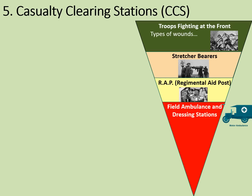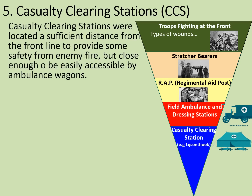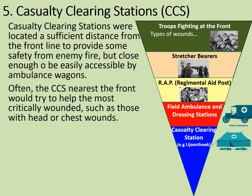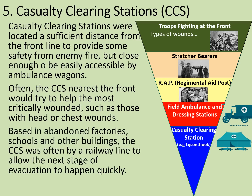For more permanent care, there were the casualty clearing stations. Casualty clearing stations were located at a sufficient distance from the front line to provide some safety from enemy fire, but close enough to be easily accessible by the ambulance wagons. Often, the CCS nearest the front would try to help the most critically wounded, such as those with head or chest wounds. These would be based in abandoned factories, schools, and other buildings. The CCS was often positioned by a railway line in order to allow the next stage of the evacuation to happen quickly.